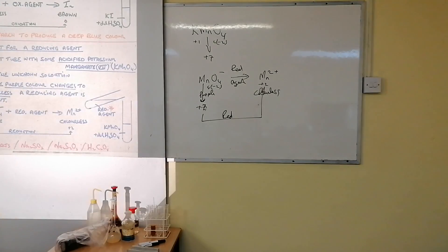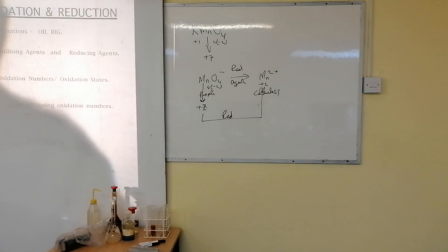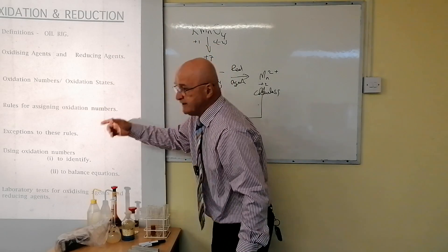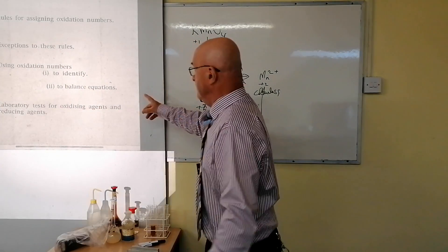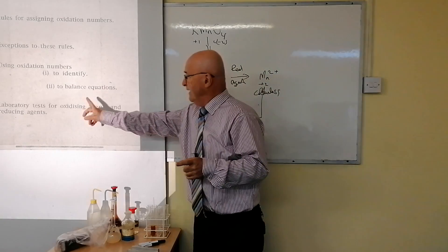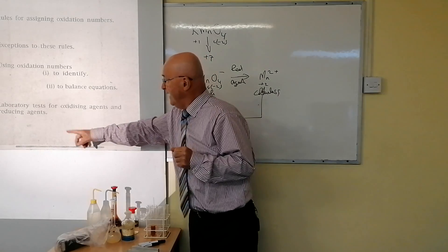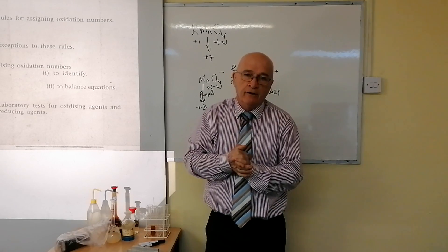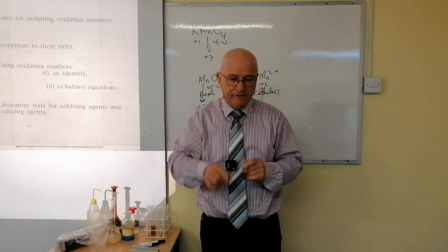Now I want you to look at the study plan. In the next video I'll be asking you to add a number eight to the bottom of it. That's everything on oxidation and reduction — down to number seven: laboratory tests for oxidizing and reducing agents. All you need to remember is acidified potassium iodide for oxidizing agents, and acidified KMnO₄ for reducing agents. I'll be asking you to add a number eight in the next video.